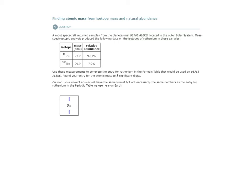So we have ruthenium again, except this sample of ruthenium has these two isotopes present in these relative abundances. 92.1% of all the ruthenium in this sample was ruthenium-98. The remaining 7.9% was ruthenium-100.